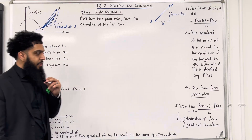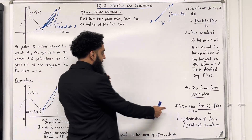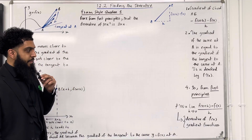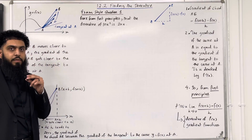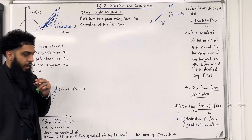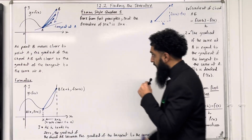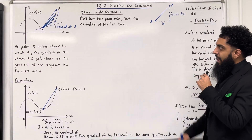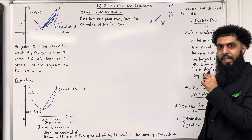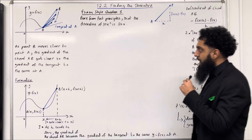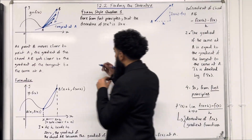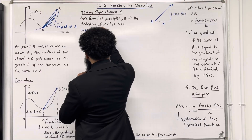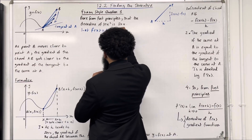Using first principles, we know that f dash of x is given by the limit as h tends to zero of f of x plus h minus f of x, all over h. Let's proceed with the solution. We're going to start off by saying that let f of x equal 10x squared. We are trying to differentiate 10x squared.